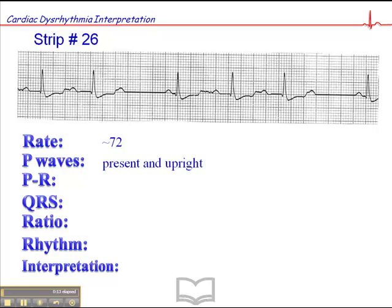There are P-waves present and upright, and they seem to be consistent in morphology. The PR interval — this is the hallmark, the key here in this rhythm — the PR interval appears to be increasing in length. If we look at the PR interval here, it's not quite as long as this one here, and then we have this P-wave that stands alone, and then we have this short PR interval, and then the cycle begins again: prolonged PR interval, even longer still, and then this P-wave that stands alone, and then a short PR interval again.